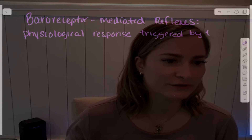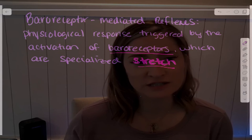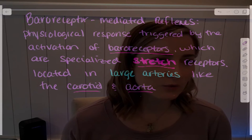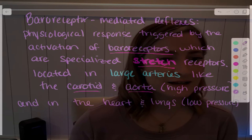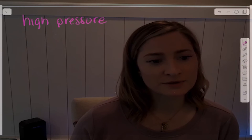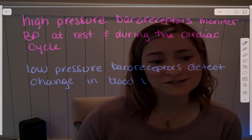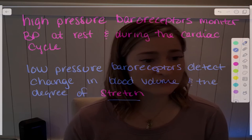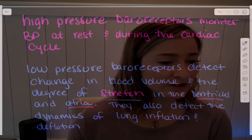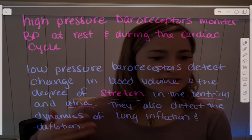The baroreceptor-mediated reflex is a physiological response triggered by the activation of baroreceptors — specialized stretch receptors located in large arteries like the carotid and aorta, which are considered high-pressure baroreceptors, and in the heart and lungs, which are low-pressure or low-volume baroreceptors. High-pressure baroreceptors monitor blood pressure at rest and during the cardiac cycle. When you inflate your lungs, you decrease preload; when you deflate your lungs, you increase preload.